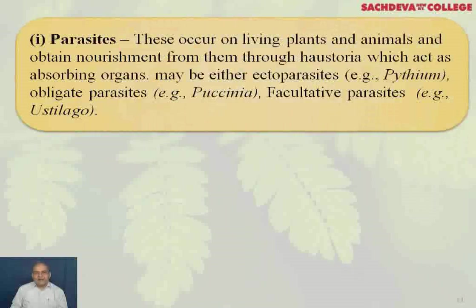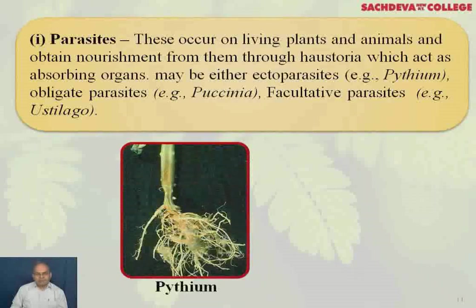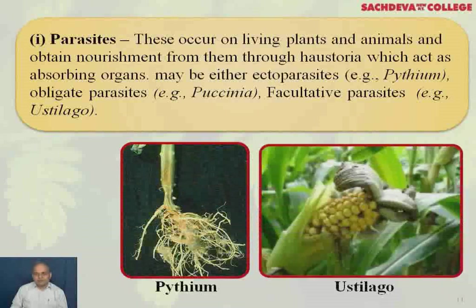Parasites occur on living plants and animals and obtain nourishment from them through haustoria, which act as absorbing organs. There are ectoparasites (example: Pythium), obligate parasites (example: Puccinia), and facultative parasites (example: Ustilago). This is Pythium on the roots of tobacco, and this is Ustilago causing smut disease, shown here as infection on maize.